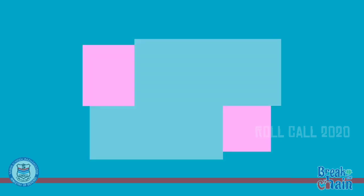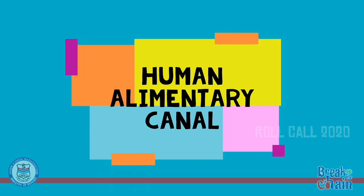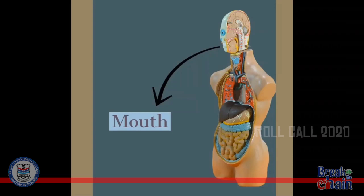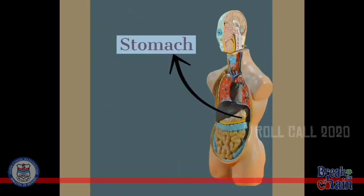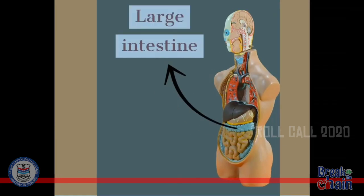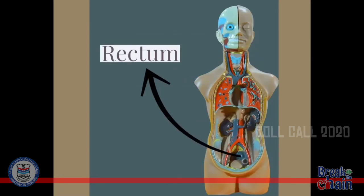Now, let's see about the human alimentary canal. The human alimentary canal begins at the mouth and ends at the anus. From the mouth, the food moves to the pharynx, esophagus, stomach, small intestine, large intestine, rectum, and finally the anus. Now let's get familiarized with the parts of the human digestive system.